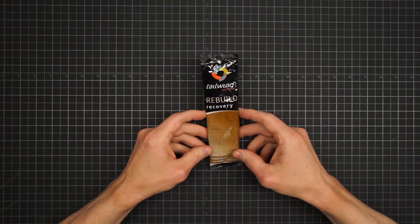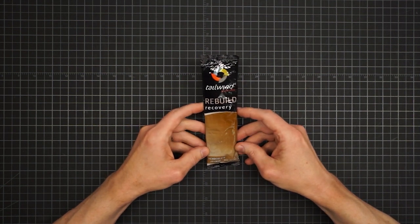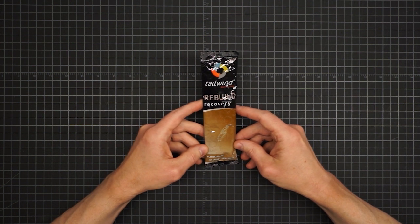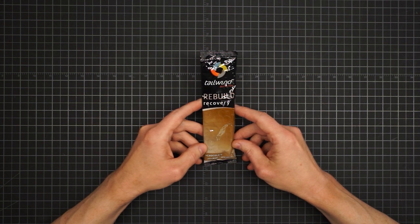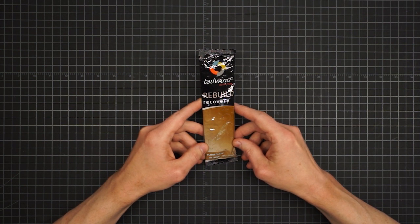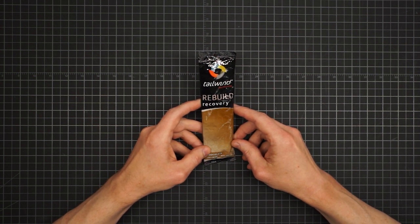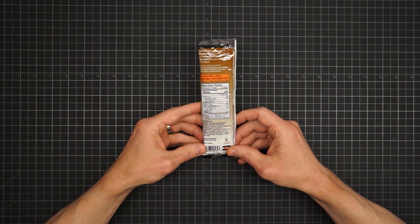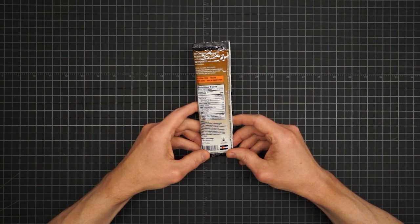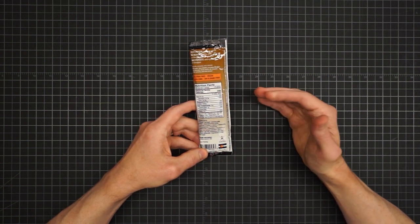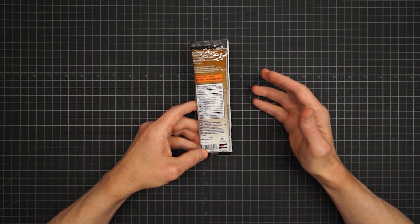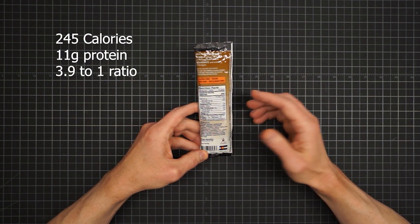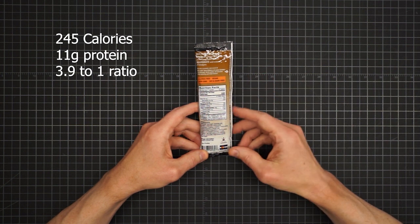Another good ready-made option are these Rebuild Recovery Packets from Tailwind Nutrition. Their primary business is electrolytes, and these packets also come with their full mix of not just sodium and potassium, but calcium and magnesium as well. And for recovery, they have both our dextrose and sucrose in that order. Instead of whey, however, they offer a vegan option, wherein they just use a variety of vegetable sources to make sure all the essential amino acids are represented. In each packet, it's 245 calories with 11 grams of protein and an almost perfect 4-to-1 ratio.